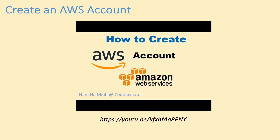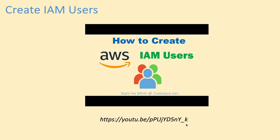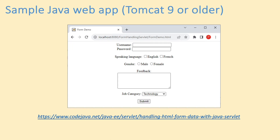If you have not signed up for an AWS account, I recommend you check my video on how to create IAM users on AWS on my YouTube channel. For the sample Java web application, I use a form-handling demo — a simple Java web application running on Tomcat 9 or older from my Java blog. You can download the WAR file from my Java blog at the URL shown.